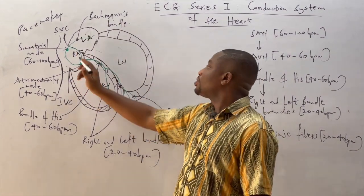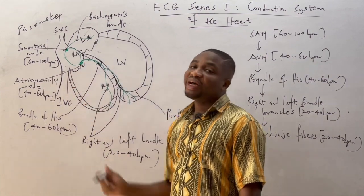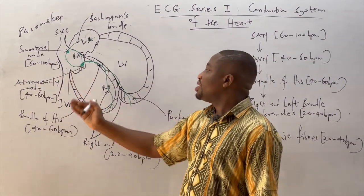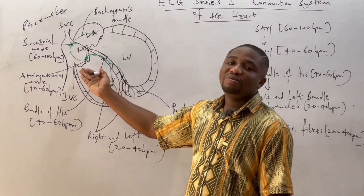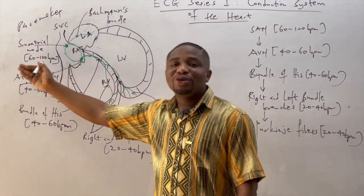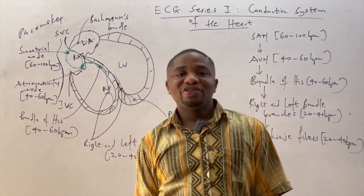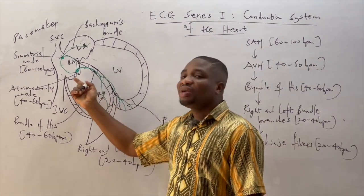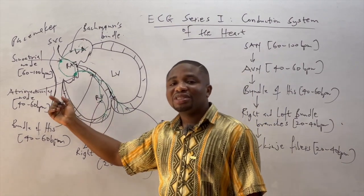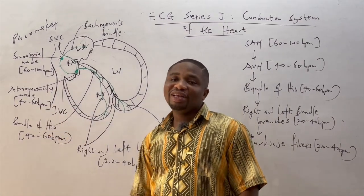The impulses are then transmitted into the atrioventricular node, which is located just above the tricuspid valve. In the absence of the sinoatrial node, or if weak impulses are generated by the sinoatrial node, the atrioventricular node generates its own electrical impulses at a rate of 40 to 60 beats per minute.